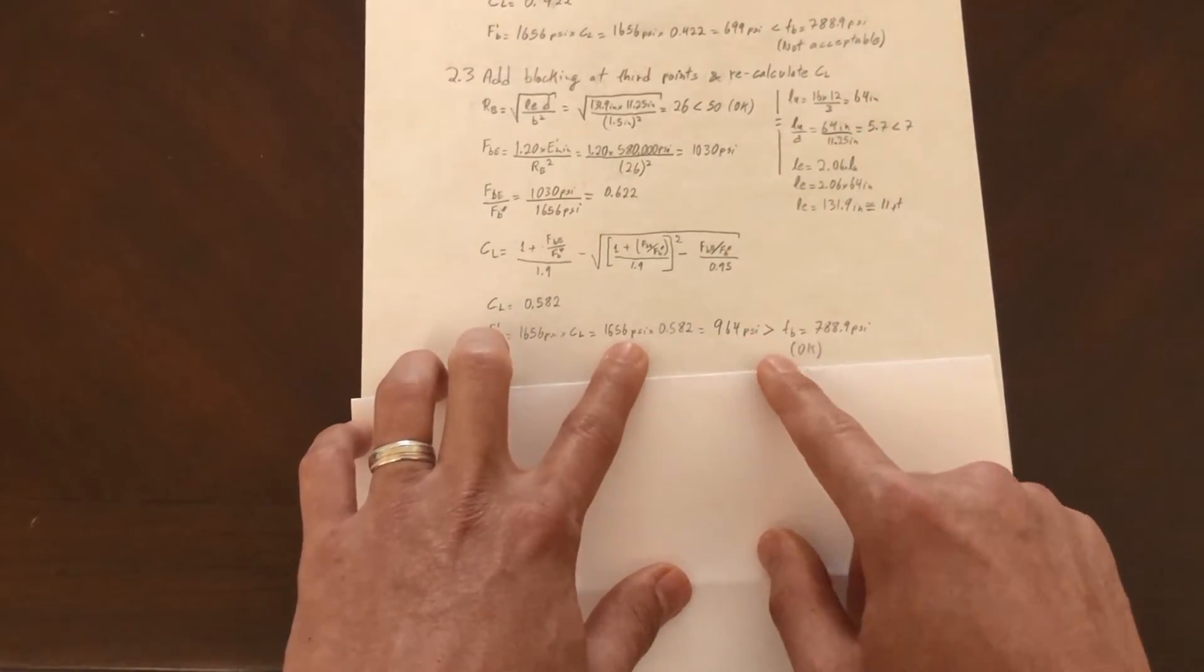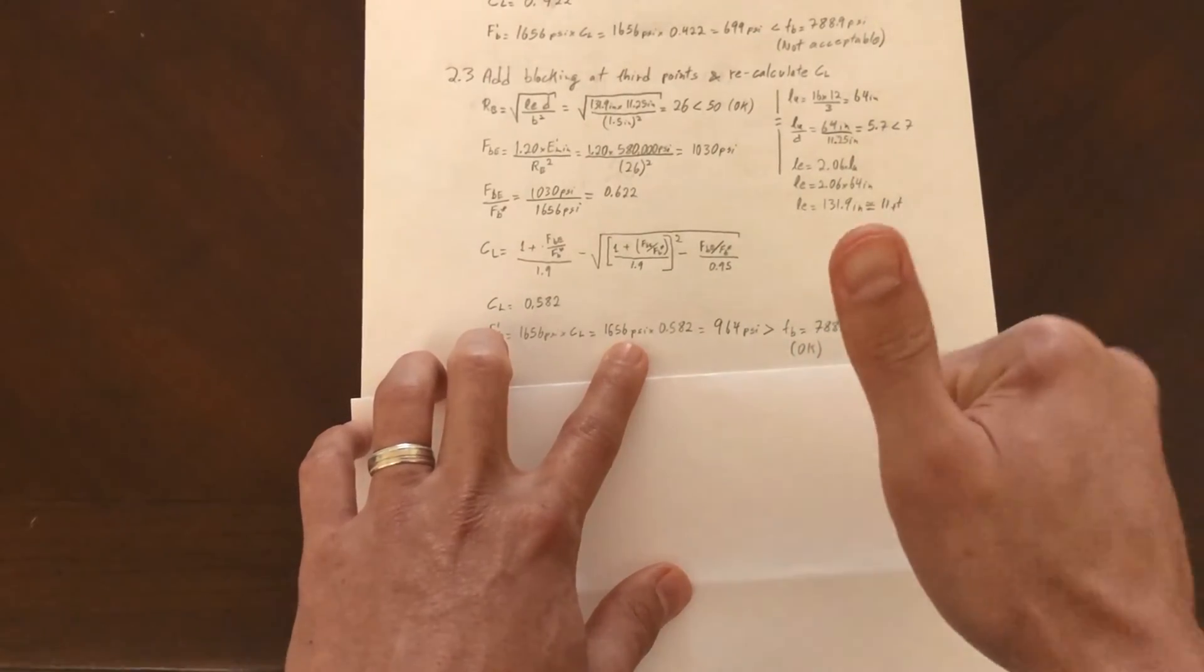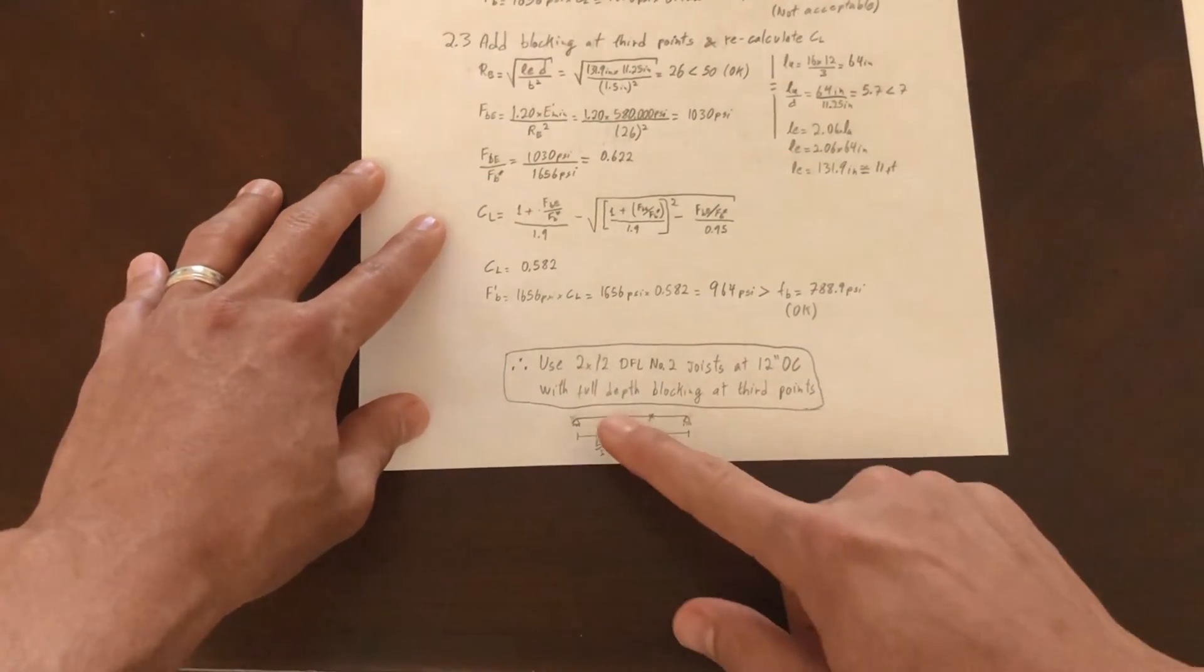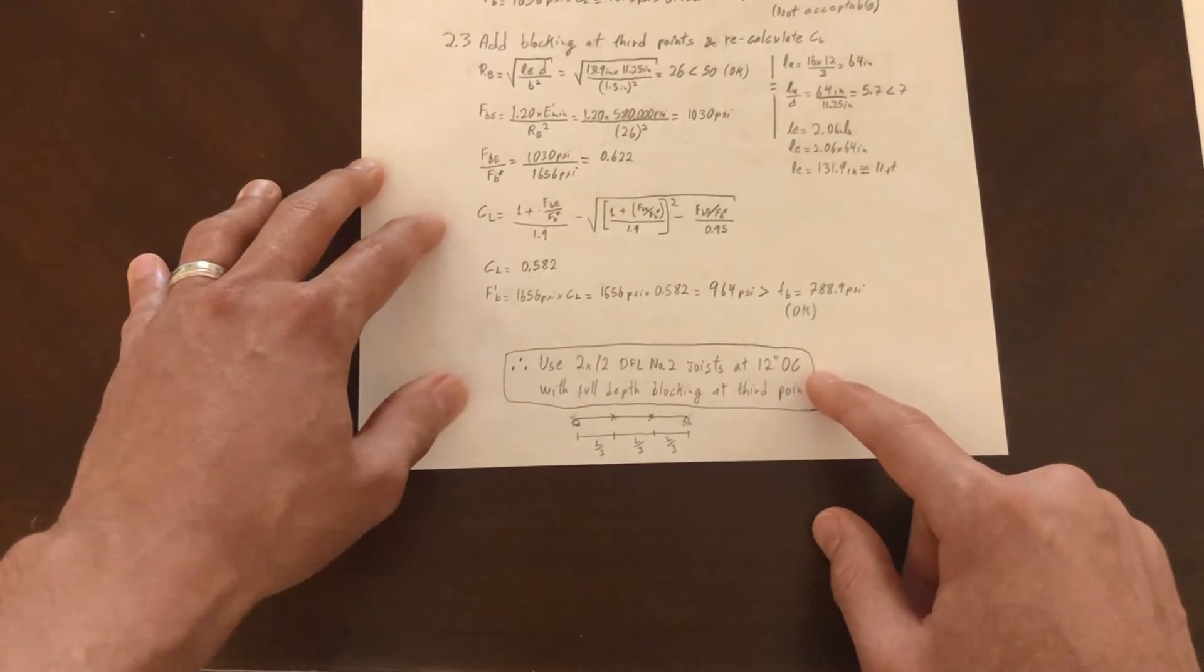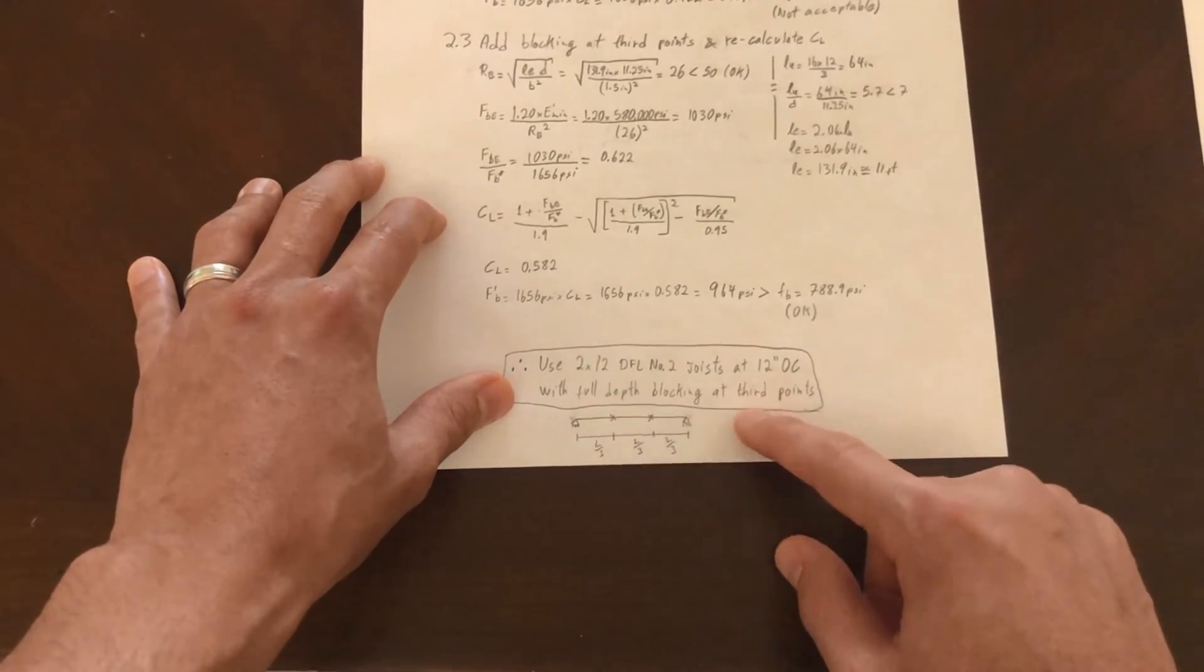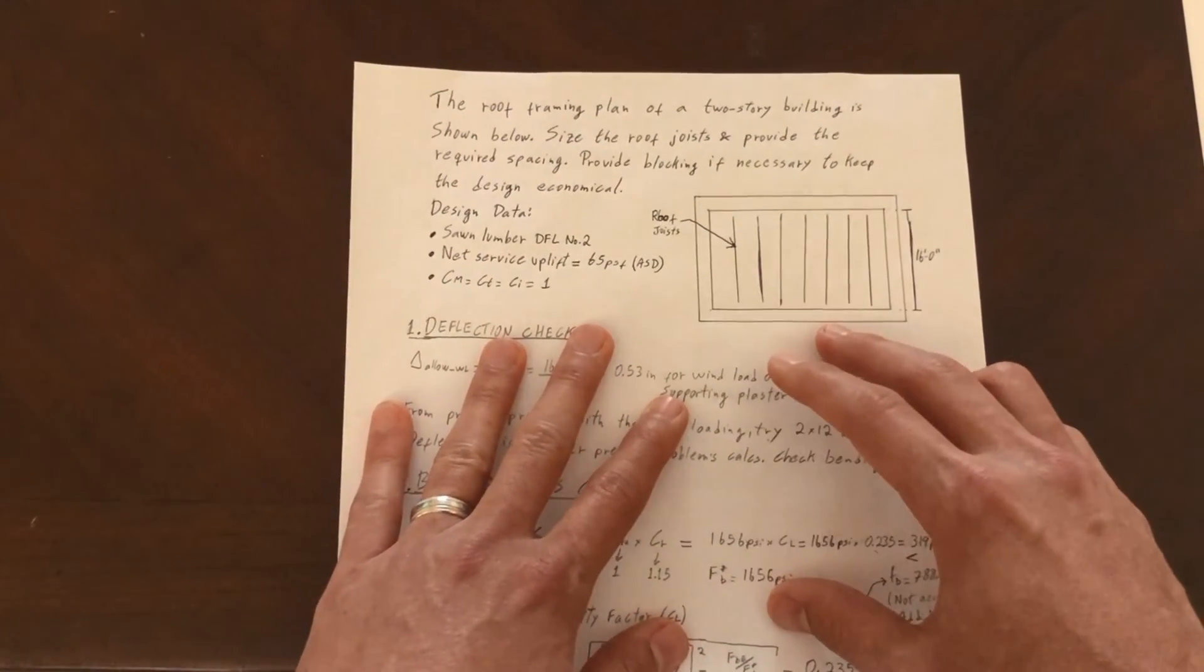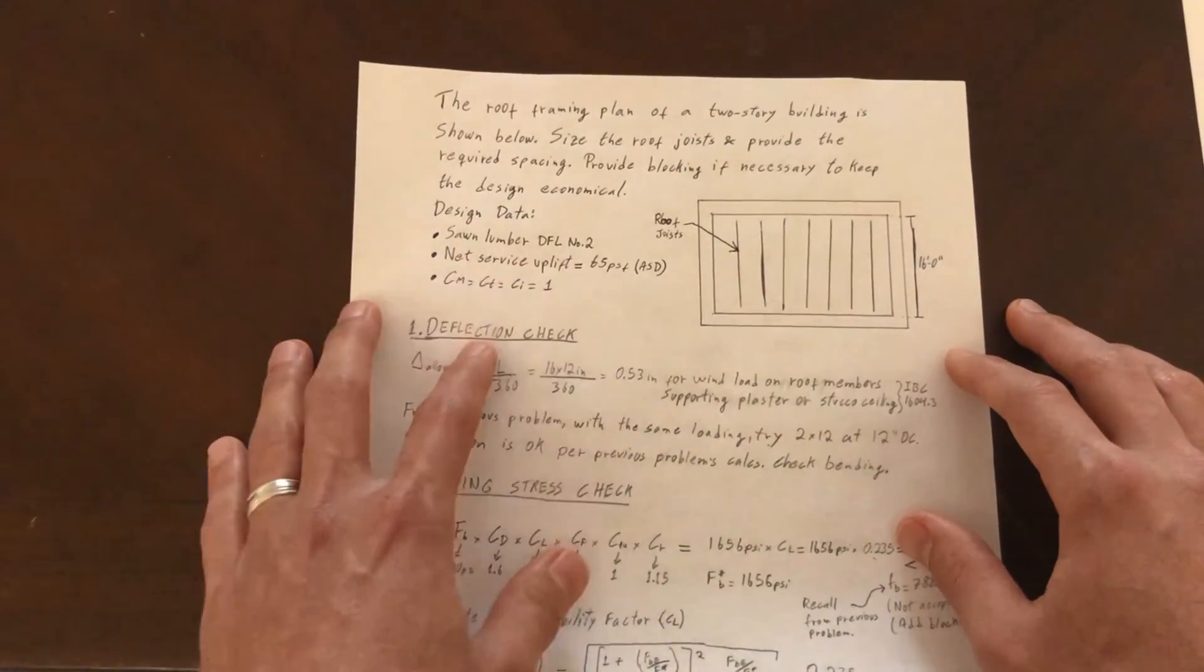Therefore, we can use 2 by 12 Douglas fir larch number two joists at 12 inches on center with full depth blocking at third points. I really hope you guys enjoyed this. Let me know if there are more wood design problems you want me to solve.